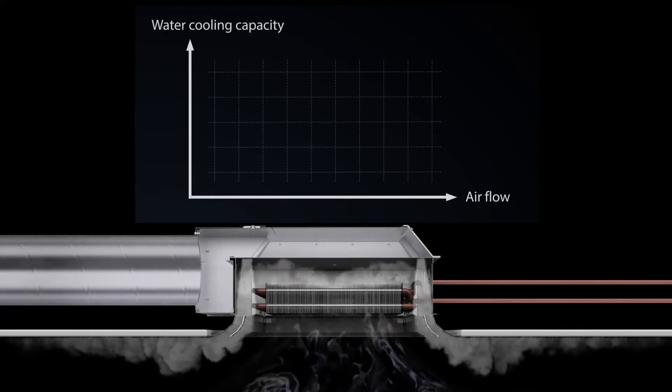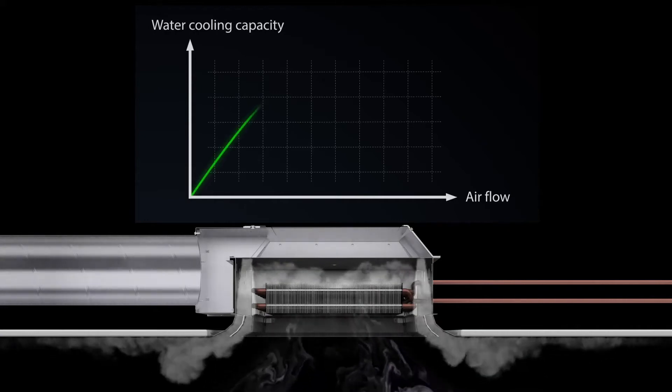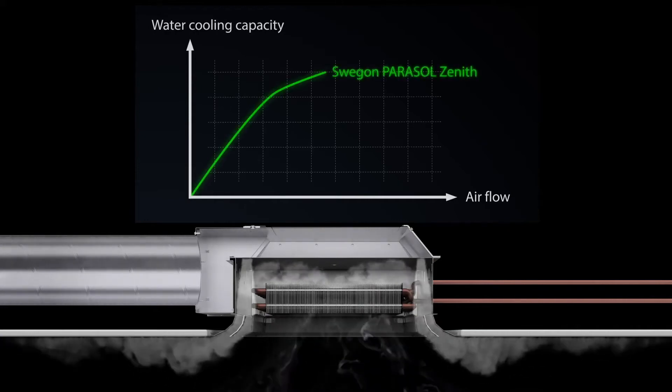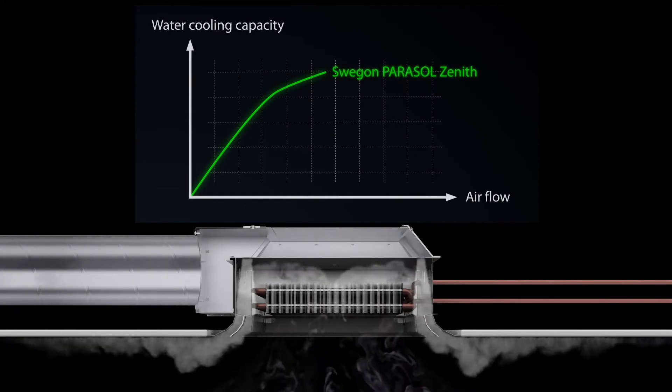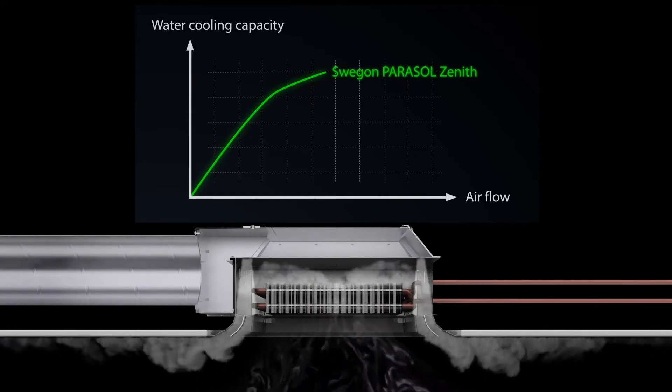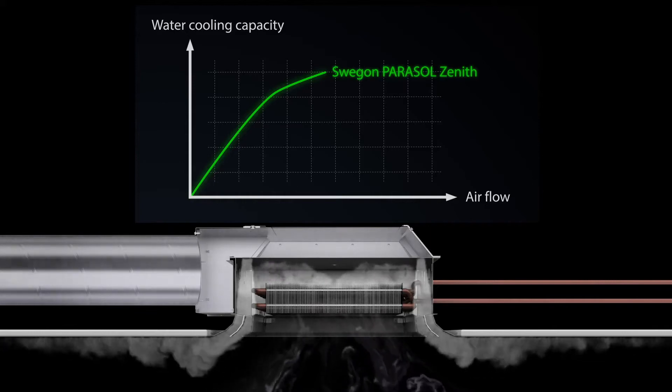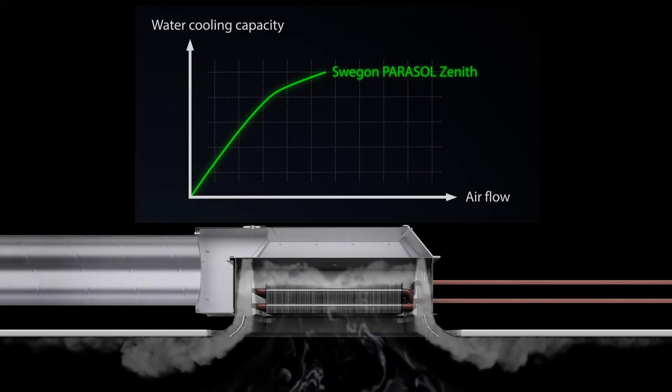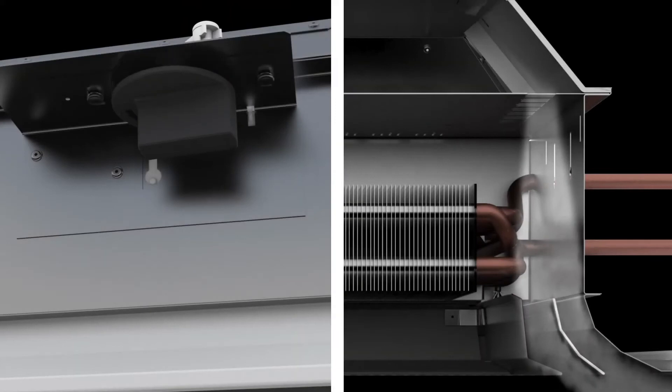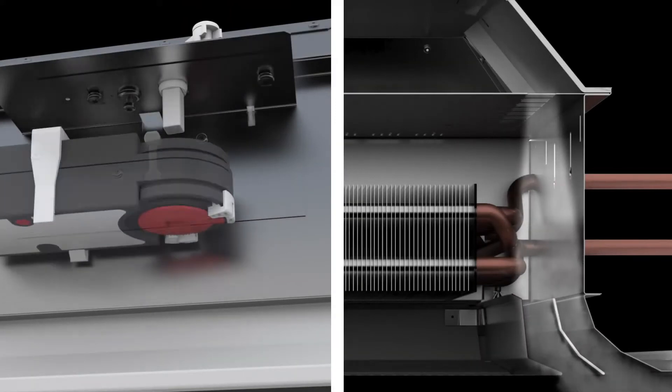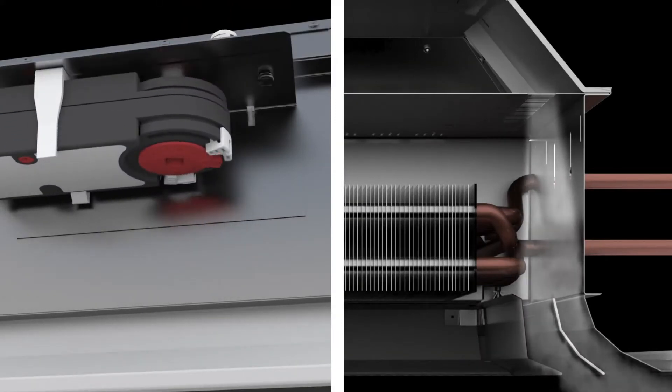The new generation Parasol Zenith has fully adjustable airflow from 0 to 100%, providing easy commissioning in CAV systems and great performance in demand-controlled ventilation systems. Because regulation is done directly in the product, it reduces the need for external dampers.